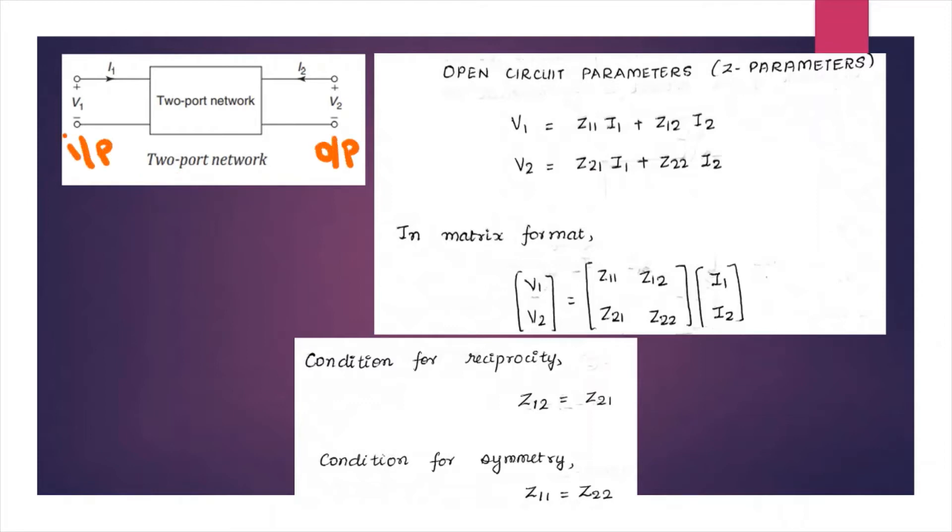input and output port. The input voltage and input current is V1 and I1, and the output voltage and output current will be V2 and I2. The direction of both the currents are flowing into the circuit.